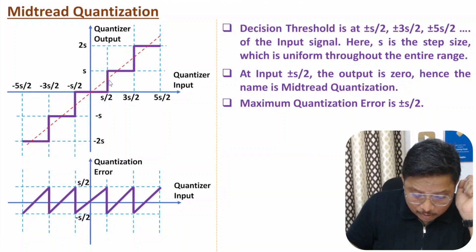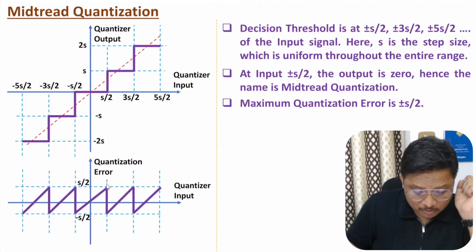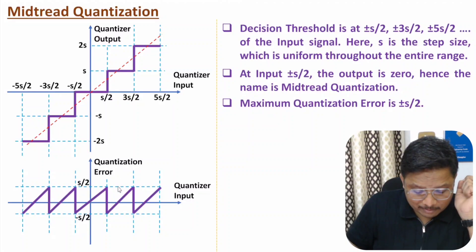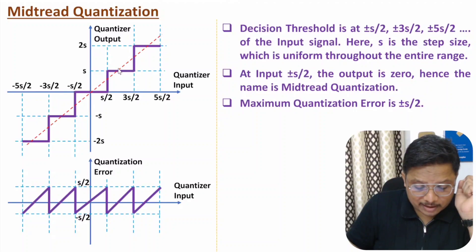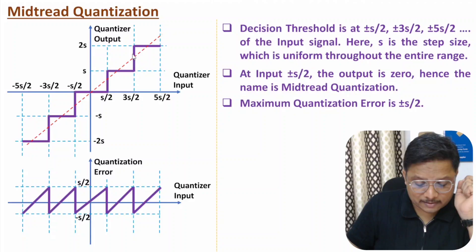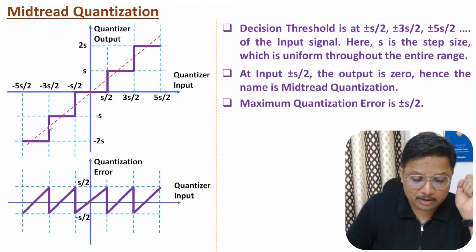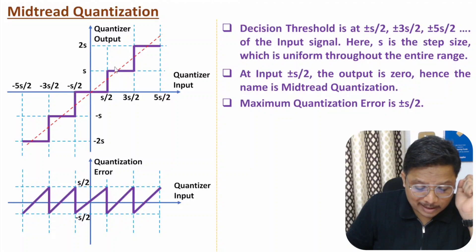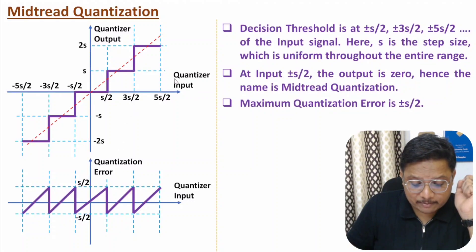If input increases beyond s/2, the output becomes s, so quantization error goes to minus s/2. If you further increase input it returns to zero, and then rises again up to plus s/2. The same behavior occurs in the negative direction. In short, the difference between those two lines is the quantization error.